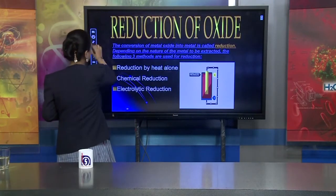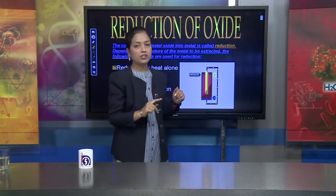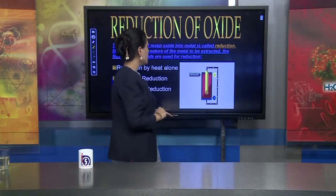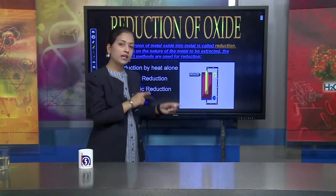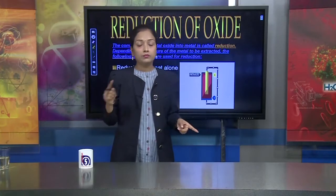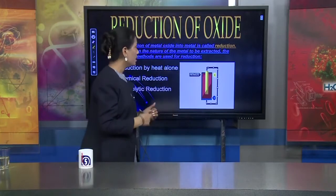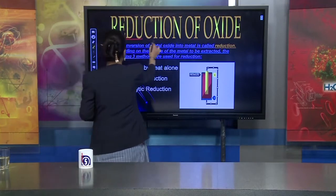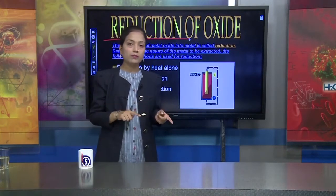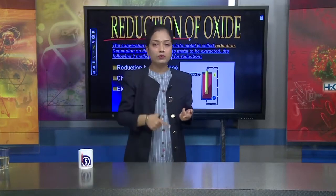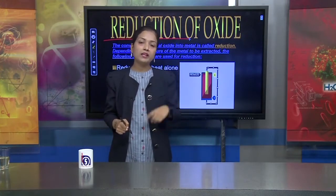Next we discuss reduction of oxide. So far: grinding was done, then concentration, then for the two ores we did roasting and calcination, and now we have the oxide ore. From oxide ore, we extract pure metal with the help of reduction. Don't be confused between reduction and oxidation. Reduction means removal of oxygen and addition of hydrogen. Oxidation means addition of oxygen or any electronegative element and removal of hydrogen or any electropositive element.